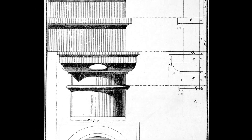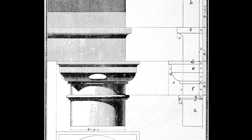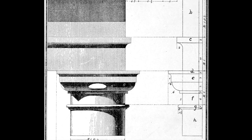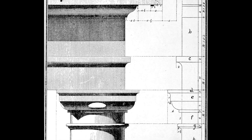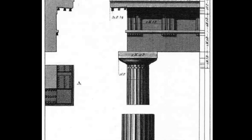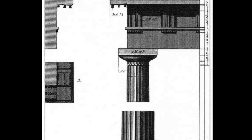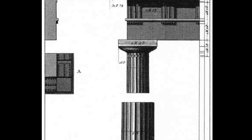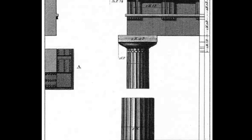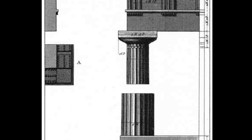The Tuscan order was developed by the Romans and based on the Doric; it's the most uncomplicated of the five. The Doric order is one of the three original Greek orders. The Greek Doric column is unique because it does not have a base,